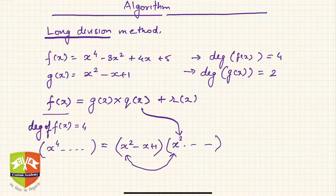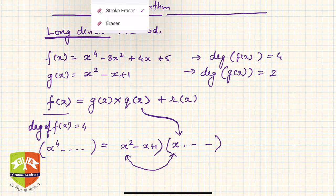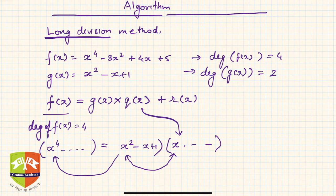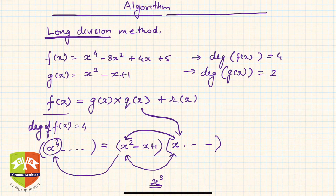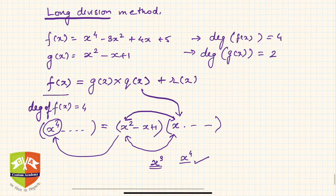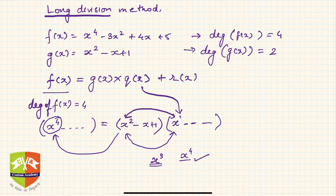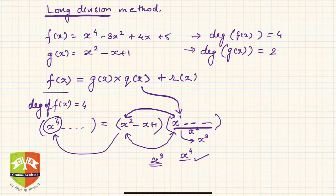If q(x) had only x (degree 1), then the highest power in the product would be x × x² = x³ — but then I can never get x⁴ on the right-hand side, which must equal the left-hand side. Also, q(x) cannot have an x³ term, because multiplying x³ by x² would give x⁵, which does not appear in f(x). So q(x) must contain an x² term.